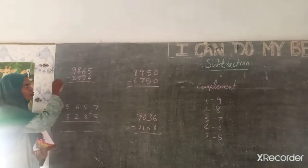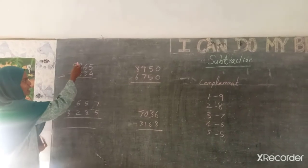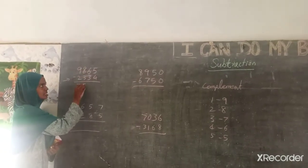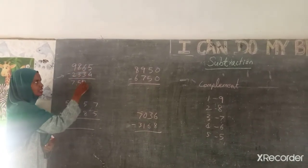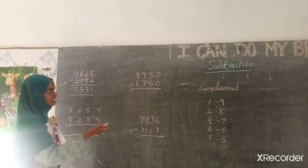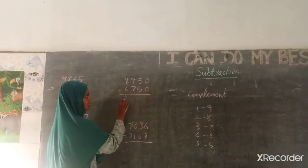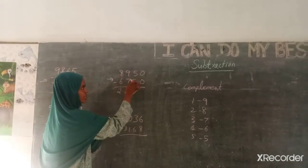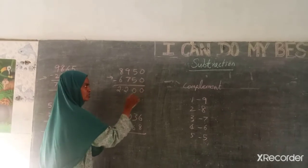We have to go from the left hand side. So 9 minus 2 is 7, 8 minus 3 is 5, 6 minus 3 is 3, 5 minus 2 is 1. Is it a bit simple? Then 8 minus 6 is 2, 9 minus 7 is 2, 5 minus 5 is 0, 0 minus 0 is 0.